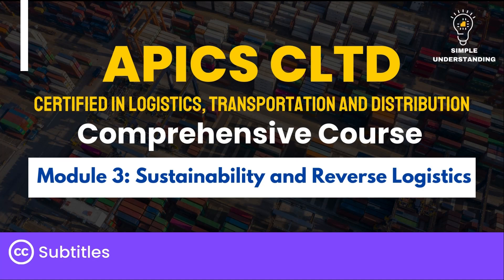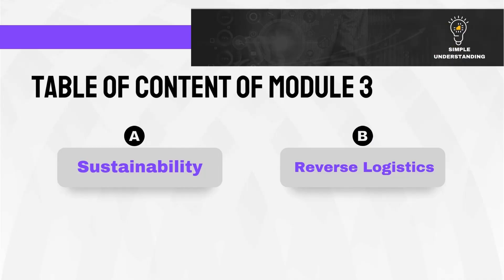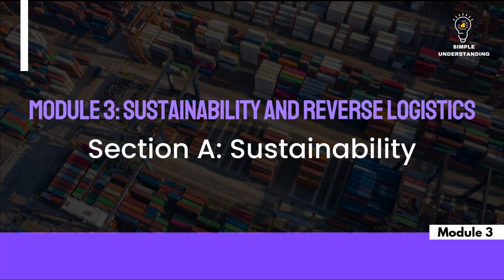Module 3: Sustainability and Reverse Logistics, which consists of two different sections. Section A: Sustainability. Section B: Reverse Logistics. This section explores sustainable logistics practices that reduce environmental impact, improve efficiency, and align with corporate responsibility goals. Each point includes a thorough explanation and real-world examples, demonstrating how companies integrate sustainability into their logistics operations.